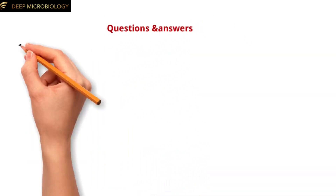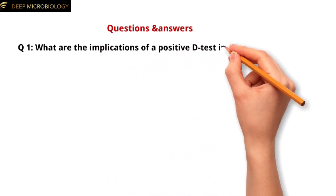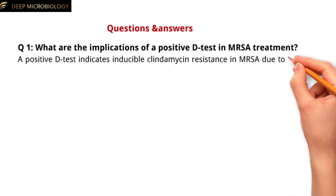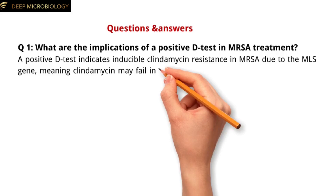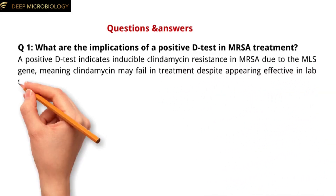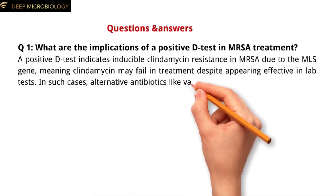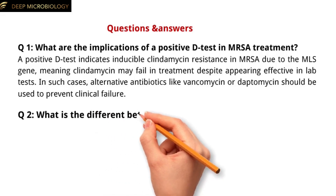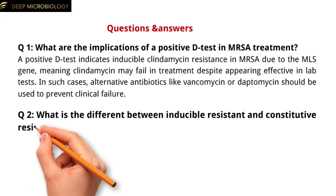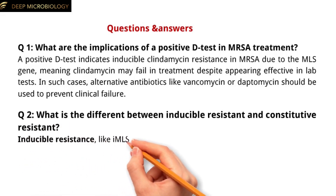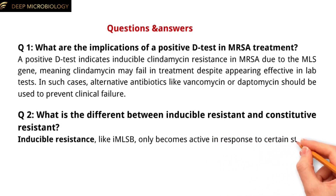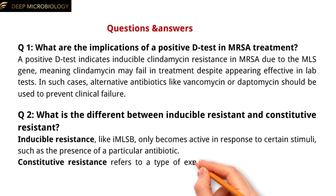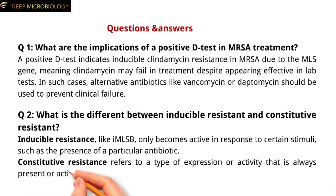Question 1: What are the implications of a positive D-Test in MRSA treatment? A positive D-Test indicates inducible clindamycin resistance in MRSA due to the MLS gene, meaning clindamycin may fail in treatment despite appearing effective in lab tests. In such cases, alternative antibiotics like vancomycin or daptomycin should be used to prevent clinical failure. Question 2: What is the difference between inducible resistance and constitutive resistance? Inducible resistance, like iMLSB, only becomes active in response to certain stimuli, such as the presence of a particular antibiotic. Constitutive resistance refers to expression or activity that is always present, regardless of environmental conditions.